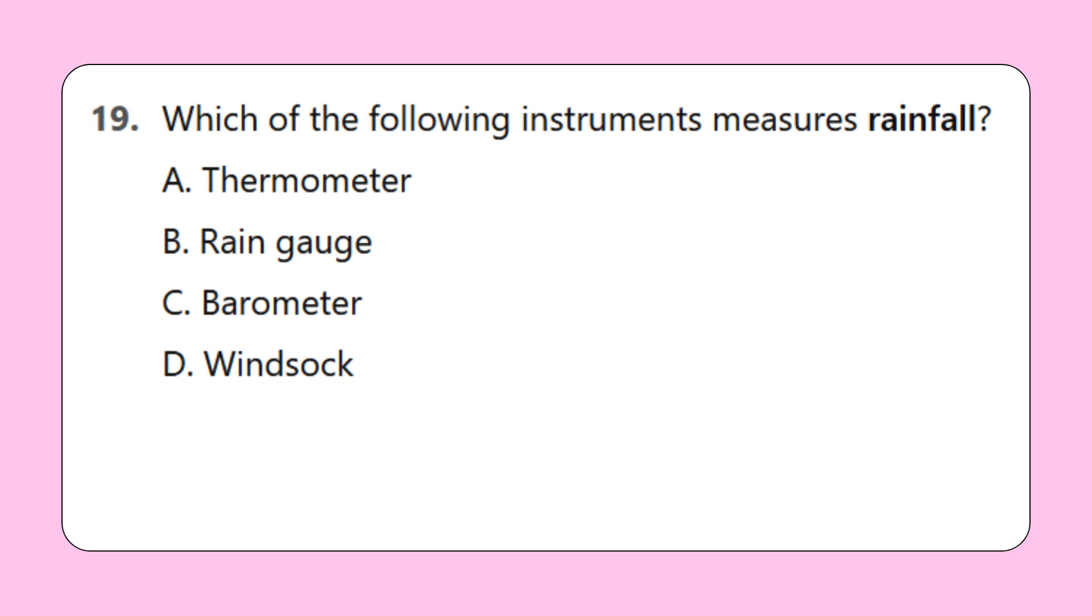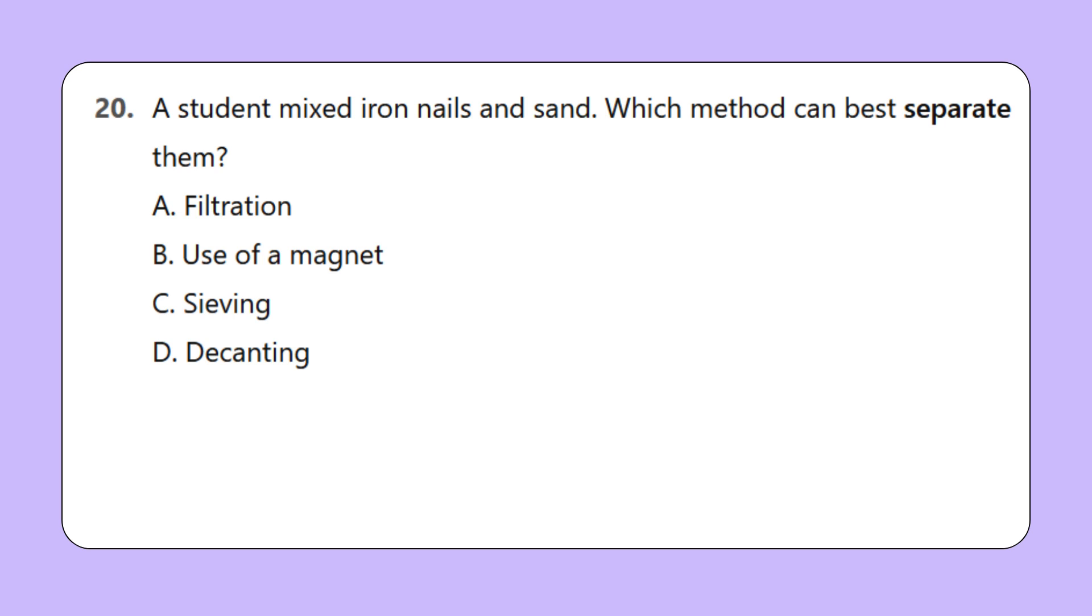Question 19: Which of the following instruments measures rainfall? Question 20: A student mixed iron nails and sand. Which method can best separate them? A. Filtration, B. Use of a magnet, C. Sieving, D. Decanting.